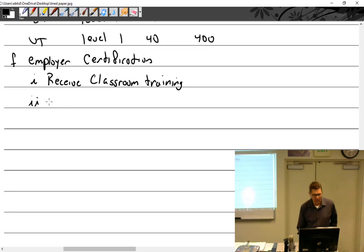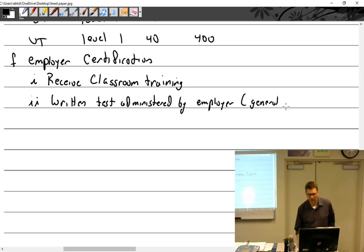Alright, written tests. Administered by, who's going to give the written test? Employer. So we may have a general and specific. General would be general non-destructive testing procedures. Specific would be specific to that method. Often the general procedures have a lot to do with how things are made, and the specific would be how to test it using the appropriate medium.